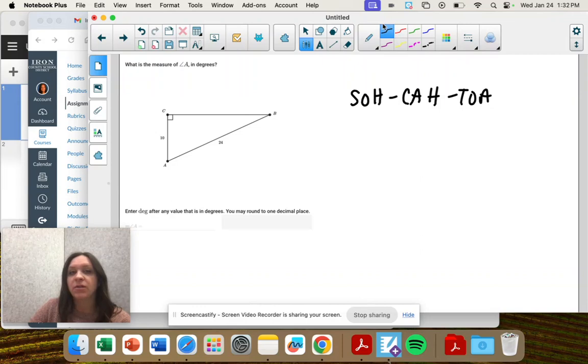So we're looking at angle A, so from angle A let's label our sides. We have the hypotenuse and we don't have the opposite and we have the adjacent.